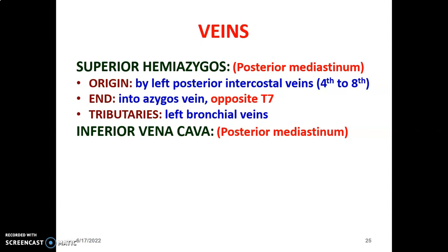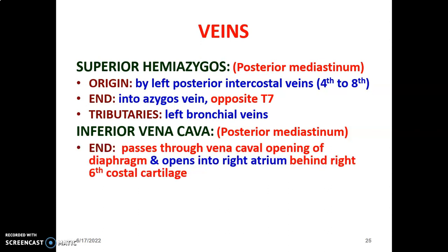The inferior vena cava is also within the posterior mediastinum. It passes through the vena caval opening of the diaphragm and terminates at the right atrium behind the right sixth costal cartilage. The inferior vena cava is formed by the union of the right and left common iliac veins. It passes from the abdomen through the vena caval opening of the diaphragm into the posterior mediastinum of the thorax, then terminates in the middle mediastinum by opening into the right atrium of the heart.